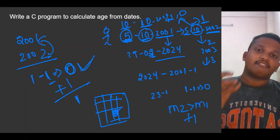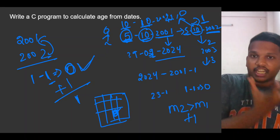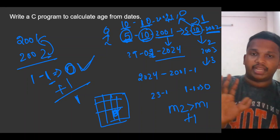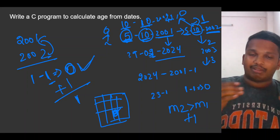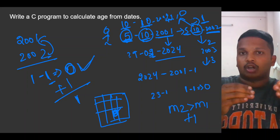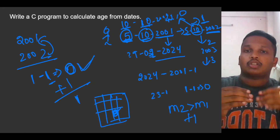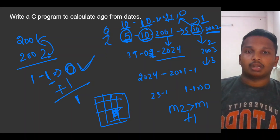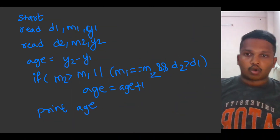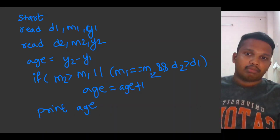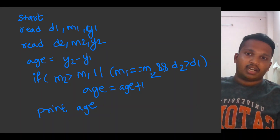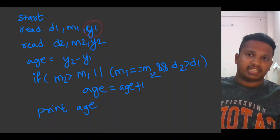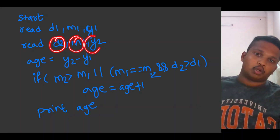So the procedure is: first compute year two minus year one and decrease by one. Then check whether he has crossed the date or not. If he has crossed the date, simply add one to get his age. Now come to the algorithm — we are given two dates where D1, M1, Y1 represent the first date and D2, M2, Y2 represent the second date.